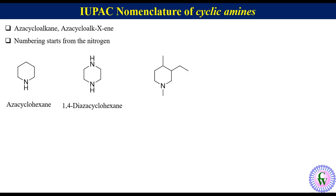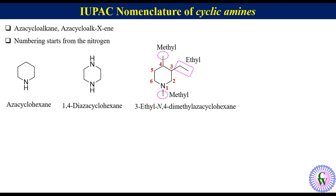Let's name this piperidine derivative. The numbering will be 1, 2, 3, 4, 5, and 6. There is an ethyl group at C3, and two methyl groups — one at nitrogen and another at C4 — so it will be named as 3-ethyl-4-methyl-N-methylazacyclohexane. In the last example, there is a double bond starting at C3, and two methyl substituents at C3 and C4, so it will be named as 3,4-dimethylazacyclohex-3-ene.